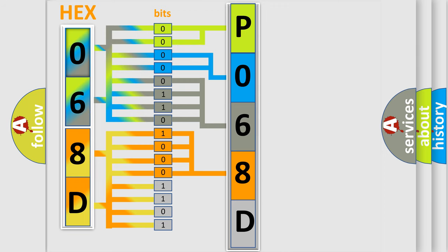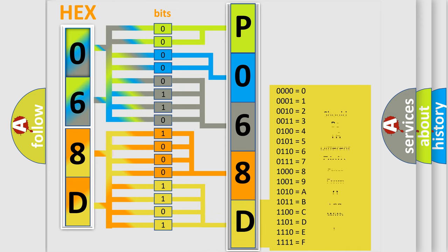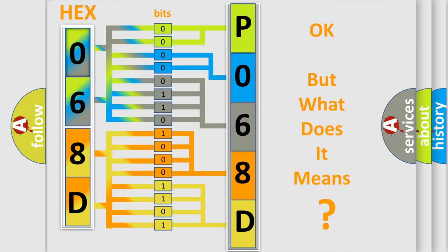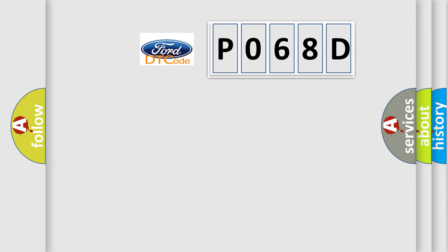A single byte conceals 256 possible combinations. We now know in what way the diagnostic tool translates received information into a more comprehensible format. The number itself does not make sense if we cannot assign information about what it actually expresses. So, what does Diagnostic Trouble Code P068D interpret specifically for Infiniti car manufacturers?